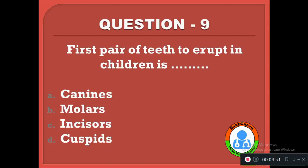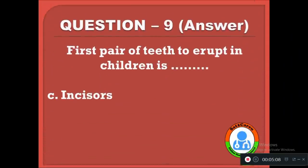Question 9: The first pair of teeth to erupt in children is — option A: canines, B: molars, C: incisors, D: cuspids. The correct answer is C, incisors.